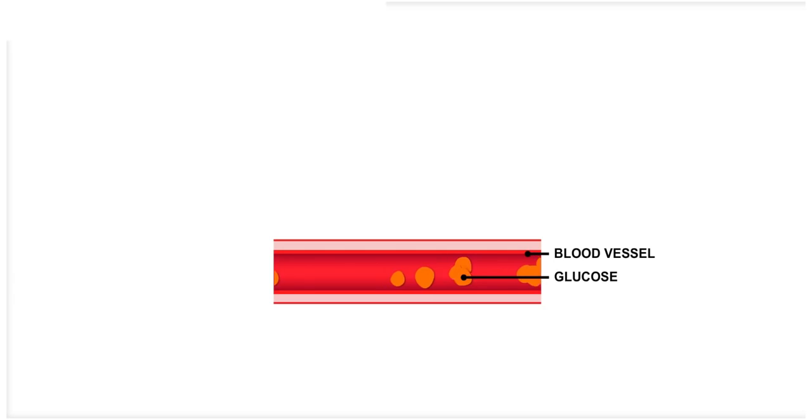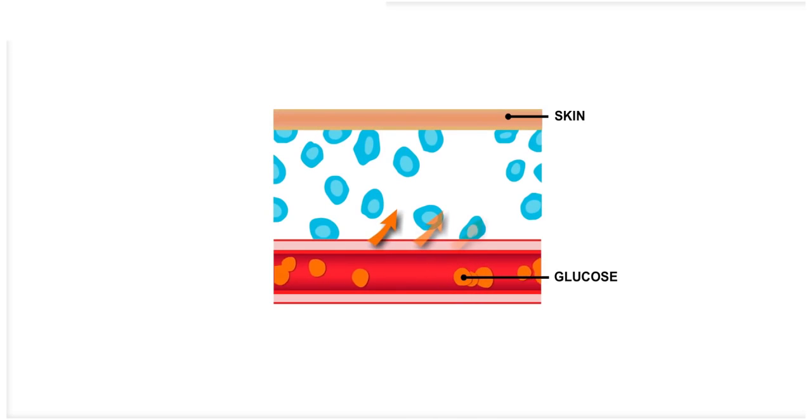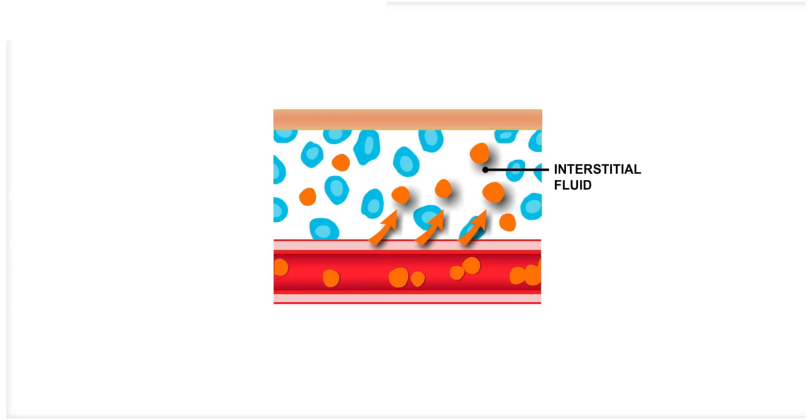Glucose is absorbed from the digestive tract into the bloodstream. Glucose then moves from the bloodstream into the fluid that surrounds all of the cells in the body. This fluid is called interstitial fluid. Once in the interstitial fluid, glucose then moves into the cells where it can be used for energy.